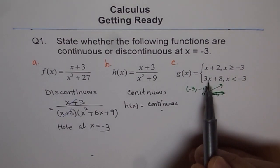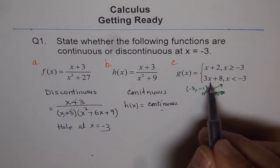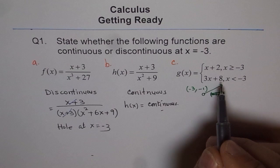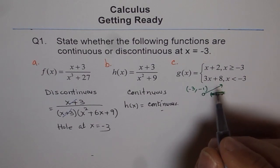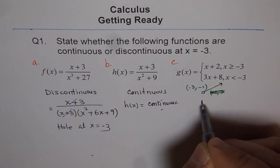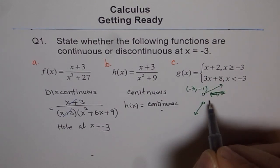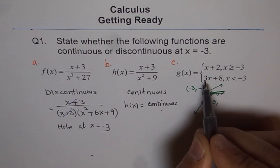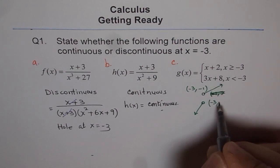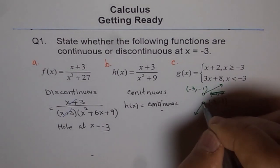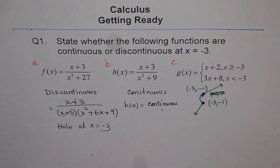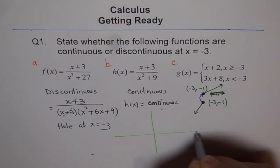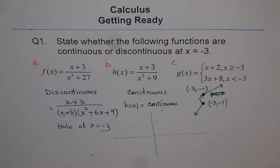Now if I plug in minus 3 into the other piece, 3x + 8, I get 3 times minus 3 plus 8, which is minus 9 plus 8, equals minus 1. So both pieces give the same value at x equals minus 3. The second piece is a steeper line with a different slope and intercept, and there is a hole at the boundary since that piece is defined for x less than minus 3. Let me redraw both lines in different colors to avoid confusion.